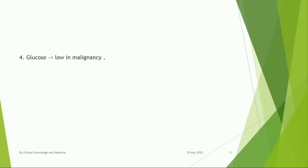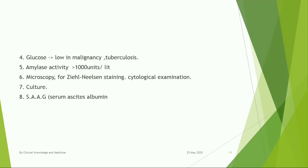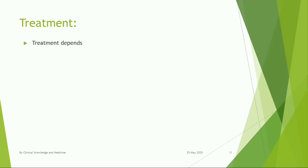Glucose: low in malignancy and tuberculosis. Amylase activity more than 1000 units per liter in pancreatic ascites. Microscopy for Gram stain and Ziehl-Neelsen staining, cytological examination, and culture.